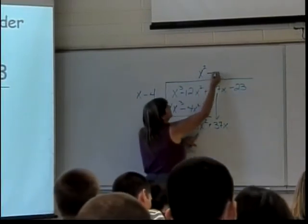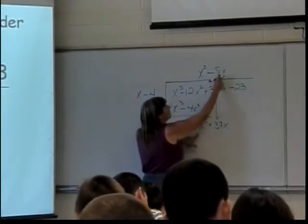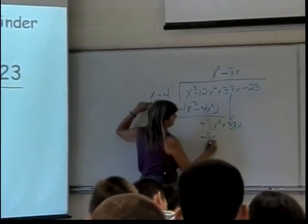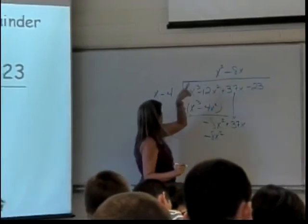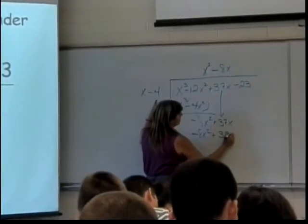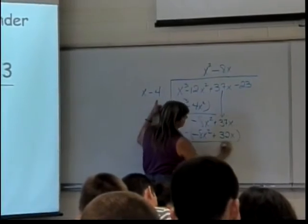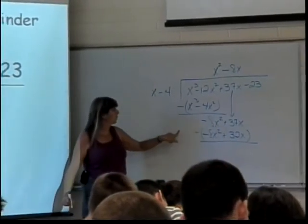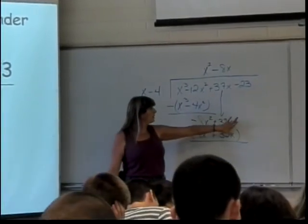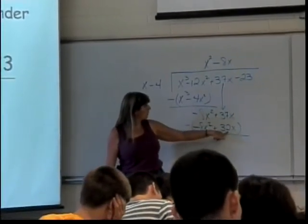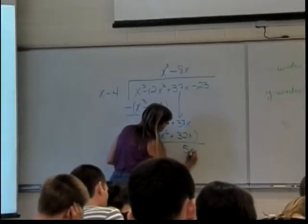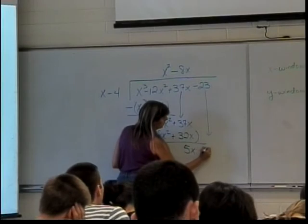What do I need to multiply X by to get negative 8X squared? Negative 8X. So then I'll multiply. Negative 8X times X is negative 8X squared. Negative 8X times negative 4 is positive 32X. And I'm subtracting this. Negative 8X squared minus the negative 8X squared is zero. Good thing. 37X minus 32X gives me 5X. And now I bring down my negative 23.